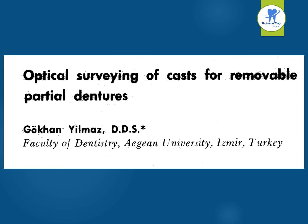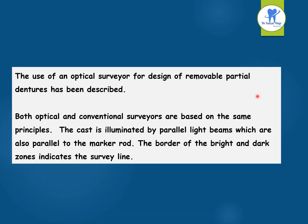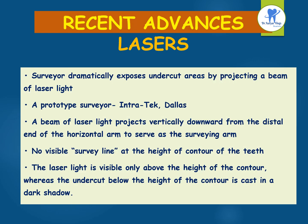The next article by Ilma et al. describes optical surveying of casts for RPD. The diagrammatic drawing of an optical surveyor shows light beams, a condenser lens, a small dense filament-type light bulb, the vertical rod of the surveyor, the movable surveyor table and a holding bar. The picture shows the optical surveyor used with a conventional surveyor. Use of an optical surveyor for design of RPD has been described. Both optical and conventional surveyors are based on the same principles: the cast is illuminated by parallel light beams also parallel to the marker rod, and the border of the bright and dark zones indicates the survey line.